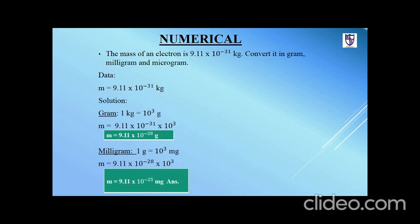The mass of an electron is 9.11 × 10⁻³¹ kg. Convert it to grams, milligrams, and micrograms. We are given the mass in kg. For conversion we need to know the conversion table. One kg equals 10³ grams, so 9.11 × 10⁻³¹ kg equals 9.11 × 10⁻³¹ × 10³ grams. Then we use the value in grams to convert it to milligrams.